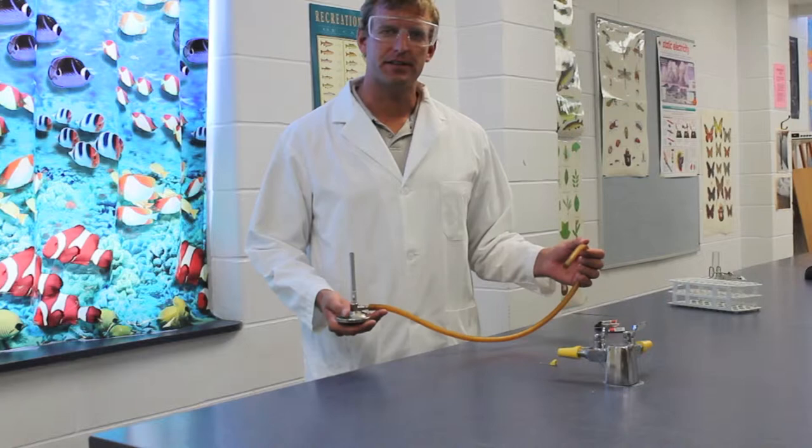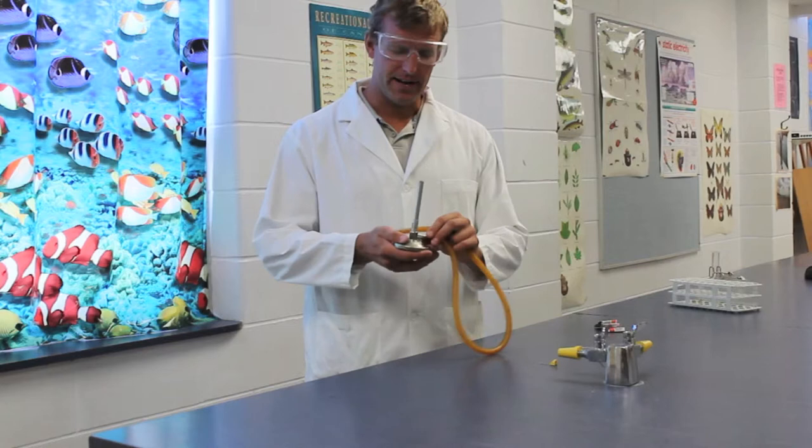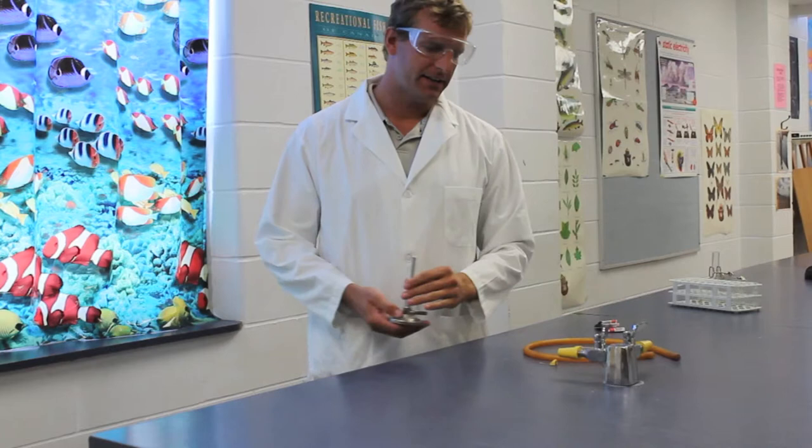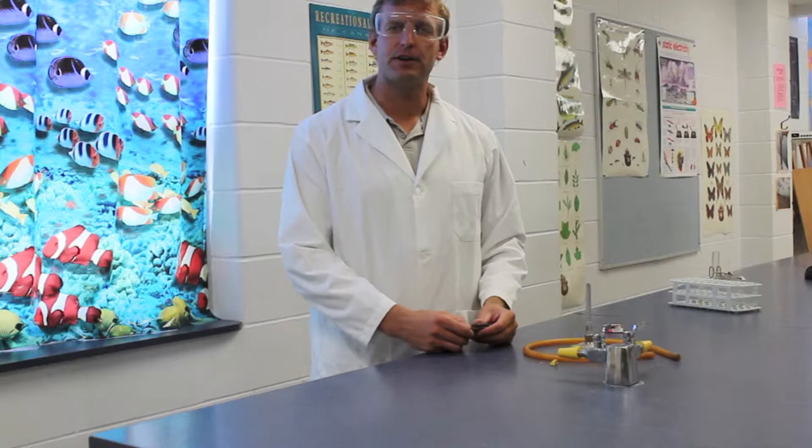In order to use a Bunsen burner, what you need is the actual burner itself, which is this metal unit here, a hose for transporting the gas, and the gas tab. In addition, in order to ignite the Bunsen burner, you need a striker, or as we use in our science classroom, a pack of matches.